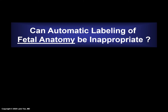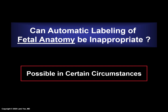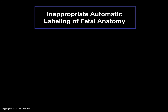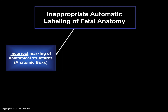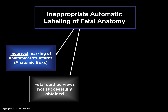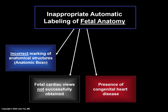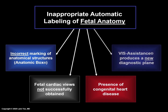One last concept to review is: can automatic labeling of fetal anatomy be inappropriate? The answer is yes — this is possible in certain circumstances. For example, inappropriate automatic labeling can occur if there is incorrect marking of anatomical structures using the Anatomic Box. Second, if fetal cardiac views are not successfully obtained. Third, in the presence of congenital heart disease — an example is transposition of the great vessels. And finally, if Virtual Intelligent Sonographer Assistance or VISA Assistance produces a new cardiac diagnostic plane, automatic labeling of fetal anatomy may be inappropriate. These will be reviewed in a separate lecture in this series.